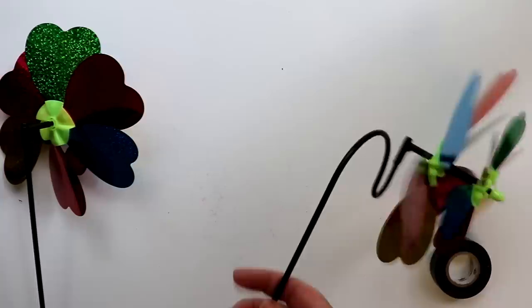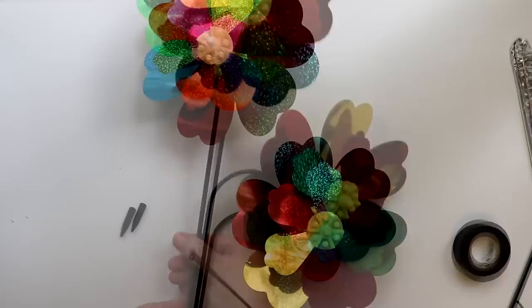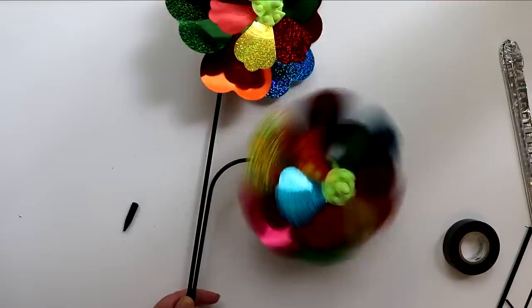Then I took the second pinwheel and popped off the pointed end at the bottom and then attached it to the plant hanger again using zip ties and electrical tape. When attaching I made sure to place so that both pinwheels could operate freely.